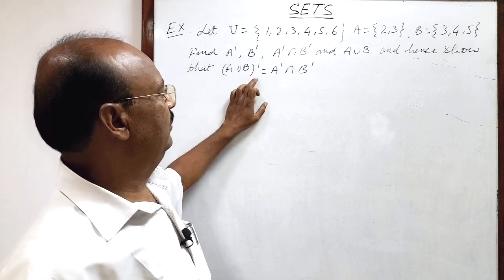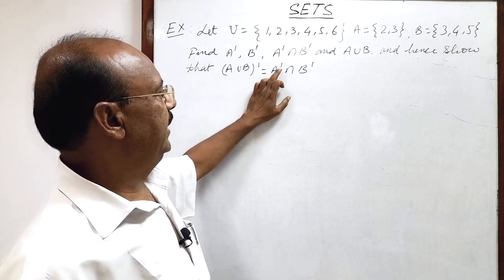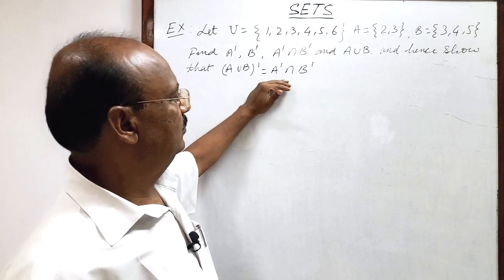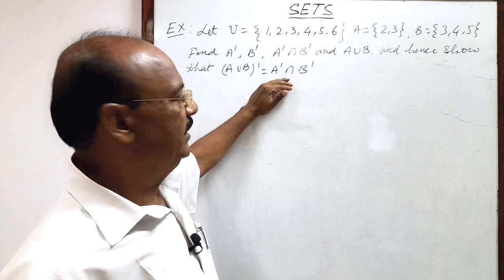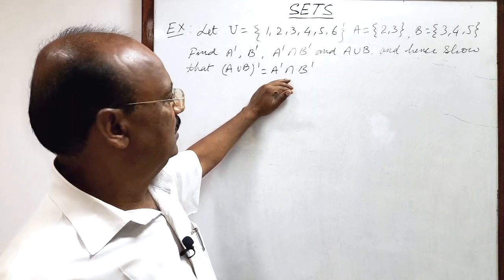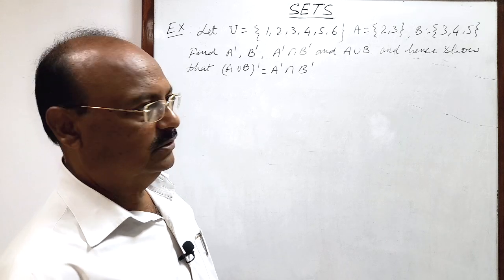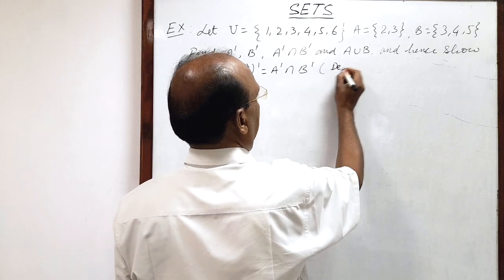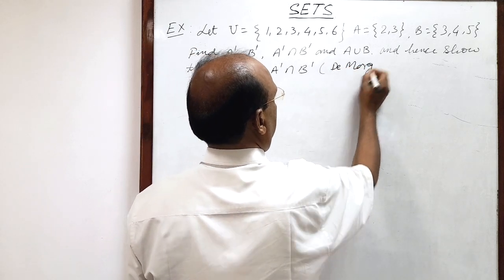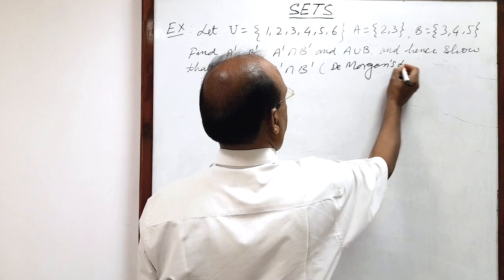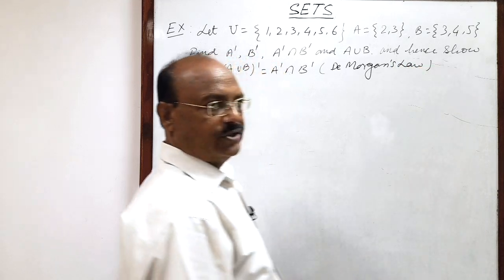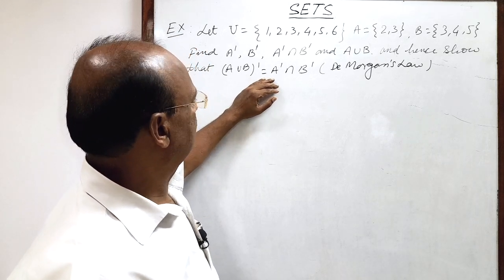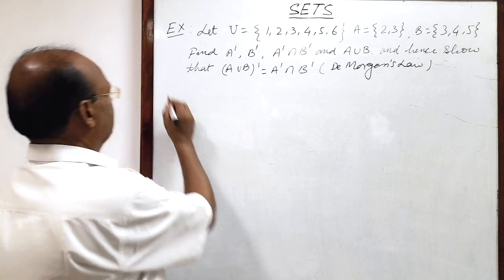We need to verify that A union B whole complement is equal to A complement intersection B complement. This is the first part of De Morgan's Law. You might have heard of this law — it is known as De Morgan's Law, and there are two laws of De Morgan. This is one of them, and we have to verify it.